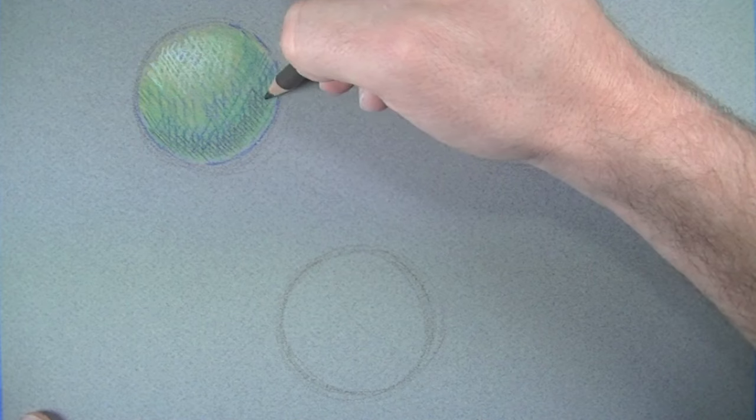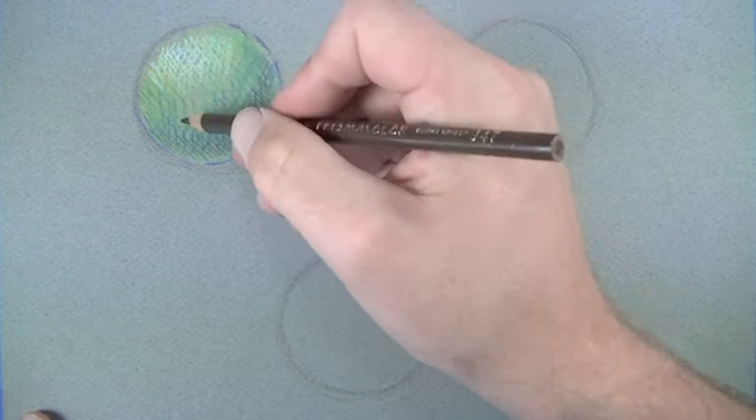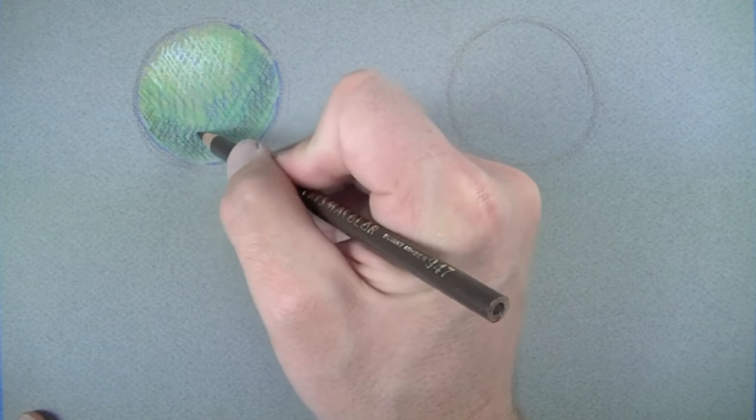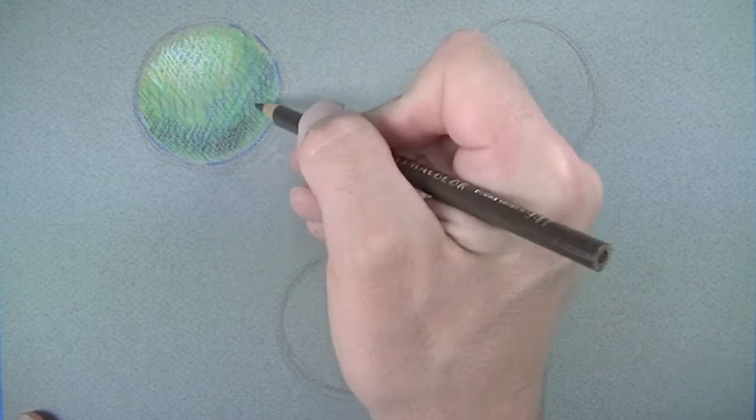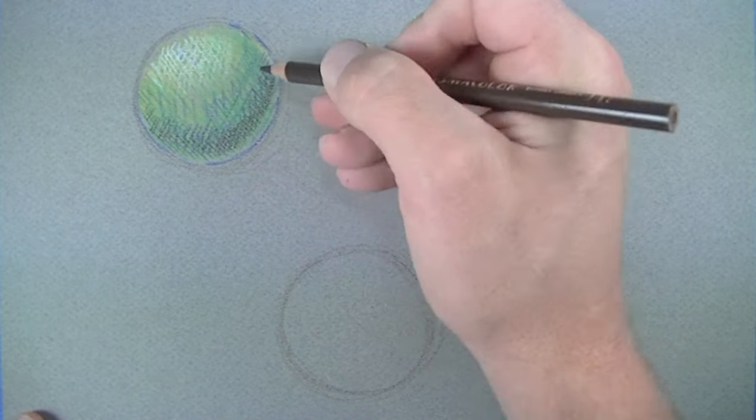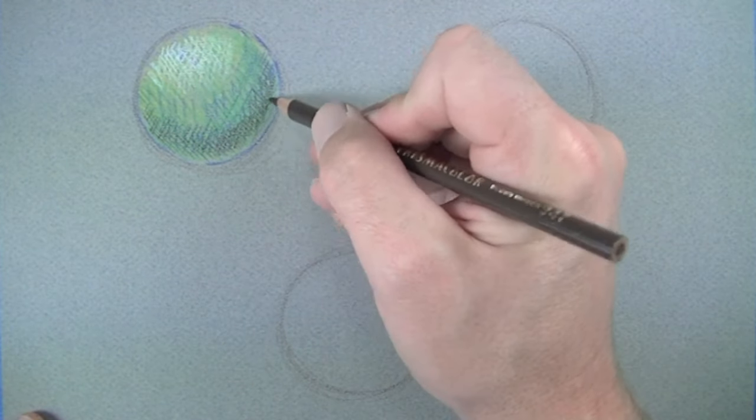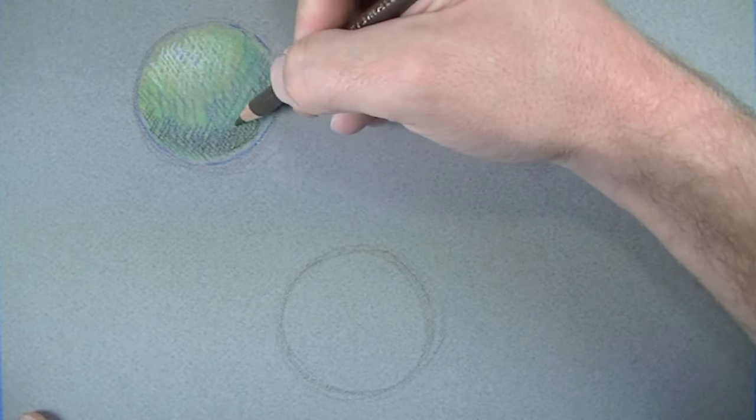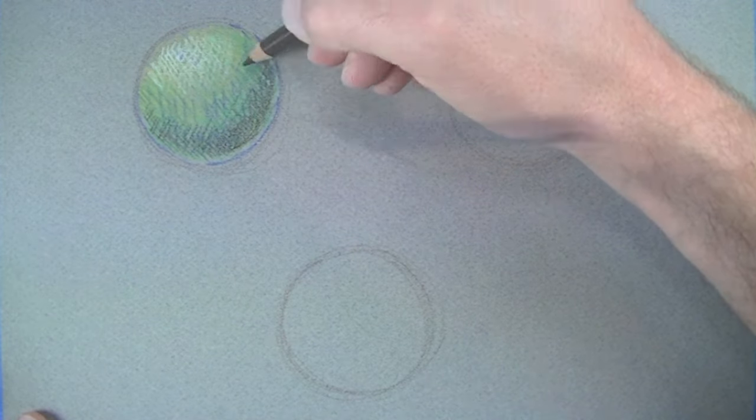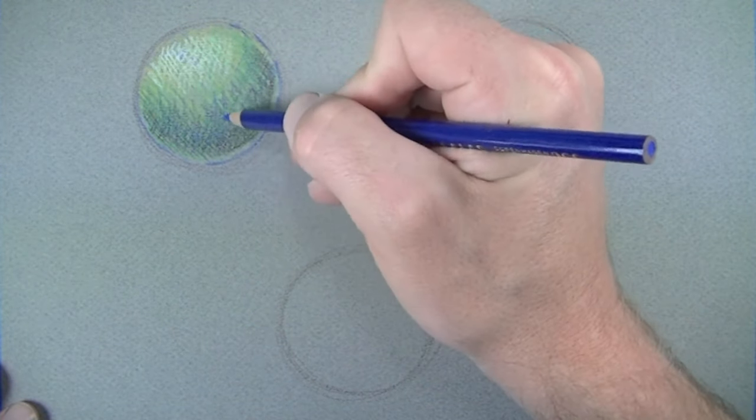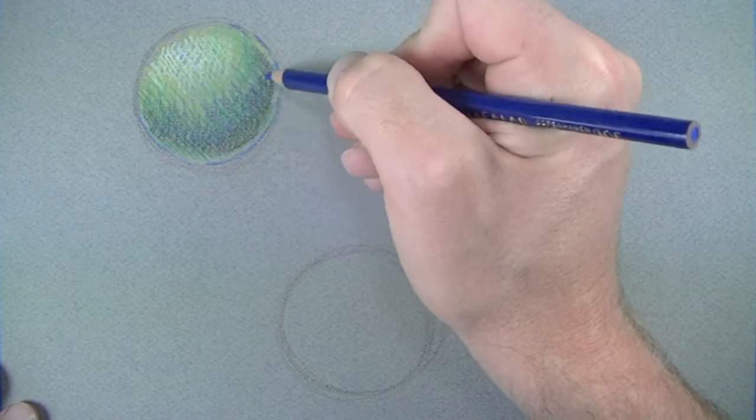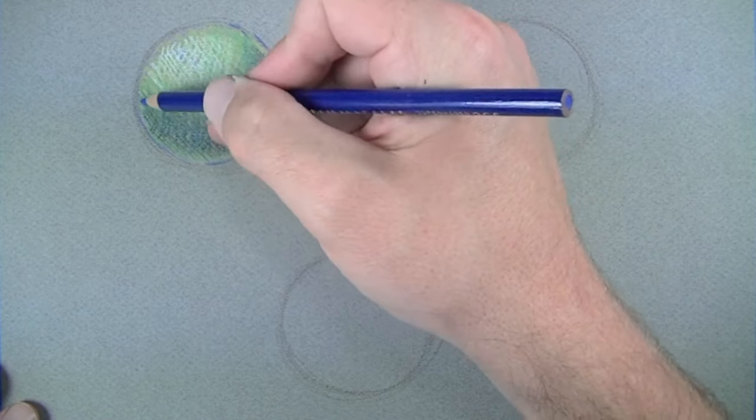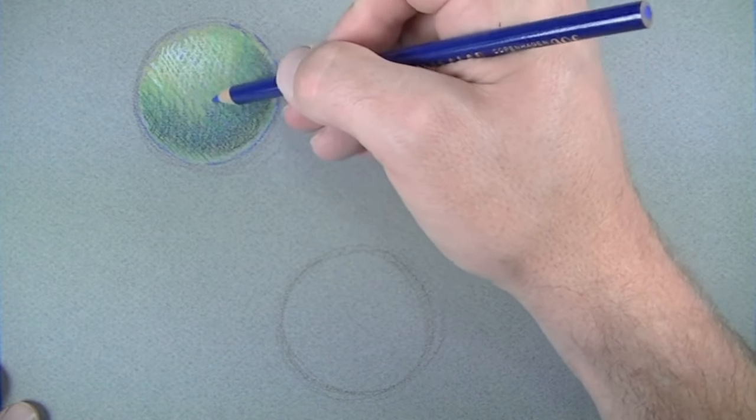Now we'll make our shadowed side just a little bit darker by hatching and cross-hatching some brown over the top of the blue-green that we've already established on the sphere. Next we'll make those tones just a bit cooler by again layering blue on top of what we've already established. By repeating this process, our color gets more intense and more convincing.